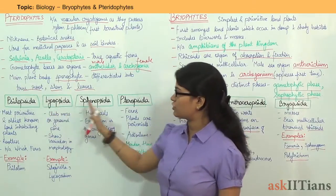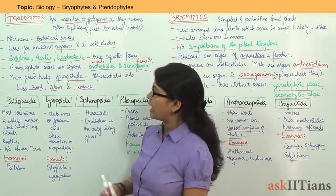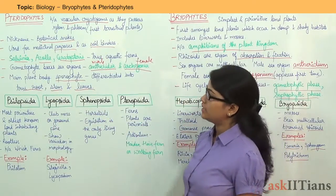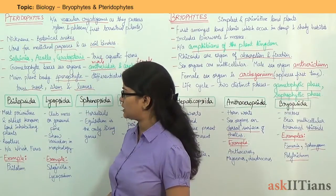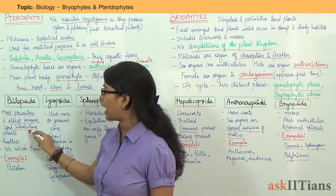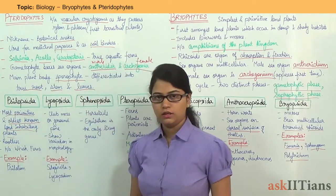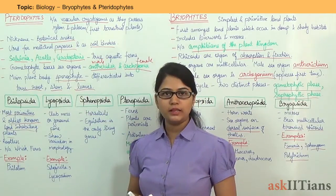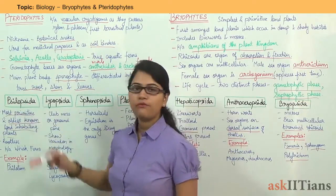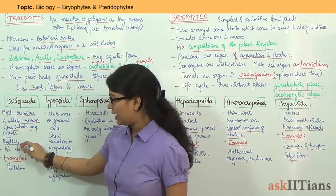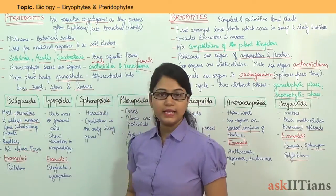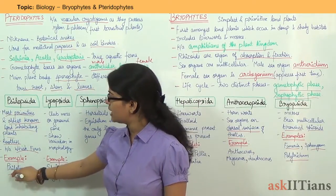Pteridophytes are classified into four groups: Psilopsida, Lycopsida, Sphenopsida, and Pteropsida. Psilopsida are the most primitive and oldest known land-inhabiting plants — an important exam point. They are rootless and are also known as Whisk ferns. The example under Psilopsida is Psilotum.